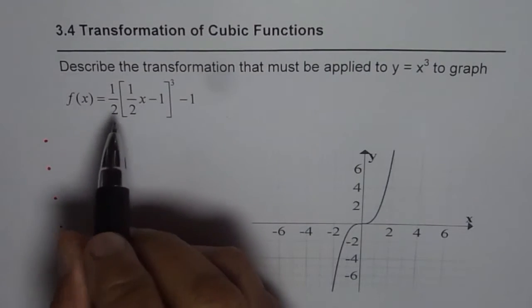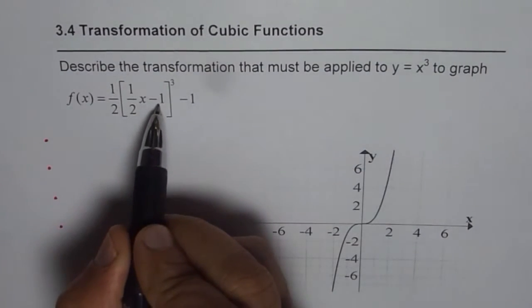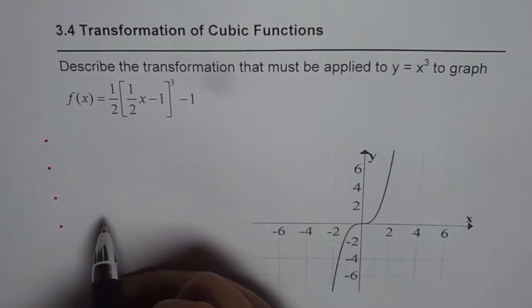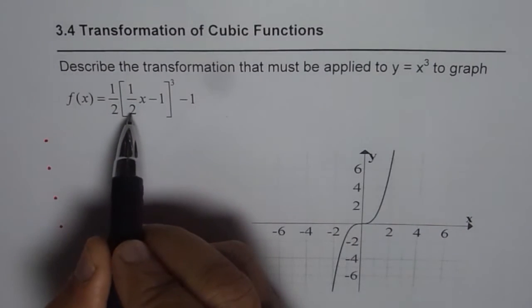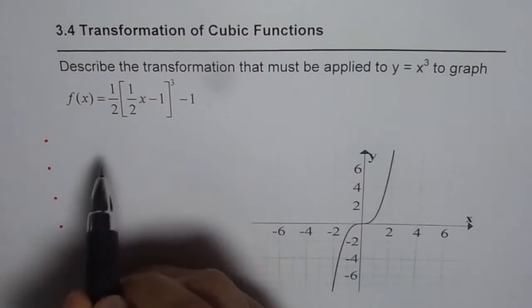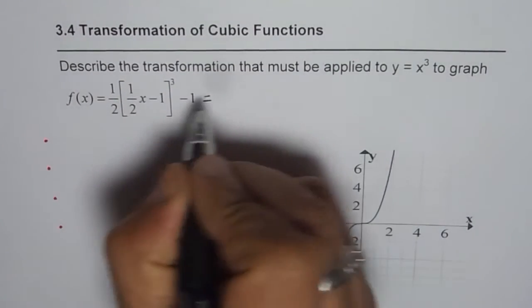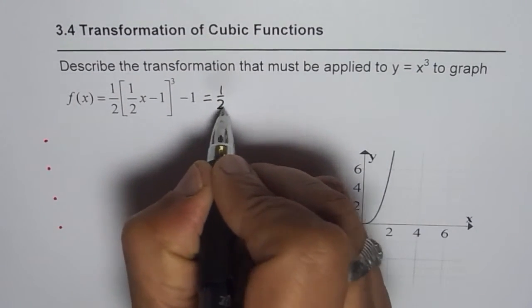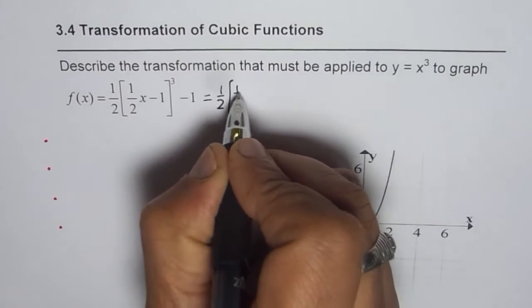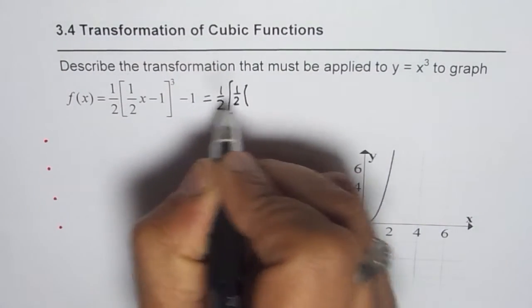Now, one of the important things is that you are given half x minus 1 within the brackets. So we should actually factor half so that we can clearly see the transformation. We'll rewrite this function as half and if I factor this half out,